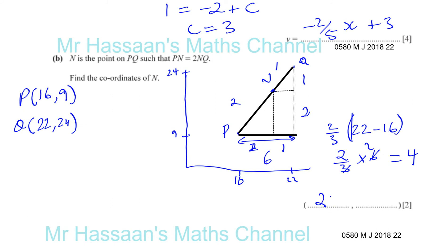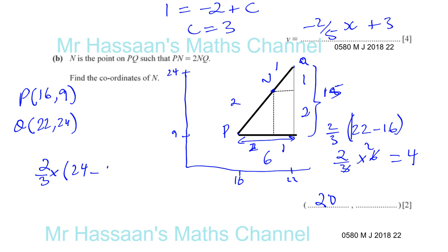The y-coordinate is also in the ratio 2 to 1 from P. The vertical distance between P and Q is 24 minus 9, which is 15 units. So 2 thirds times 15: 15 divided by 3 is 5, and 2 times 5 is 10. So N is 10 units above P, meaning the y-coordinate is 9 plus 10, which is 19. The coordinates of N are (20, 19).